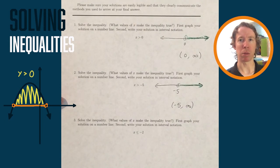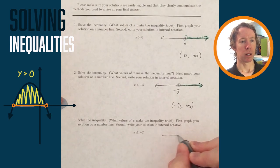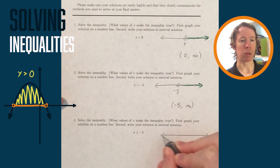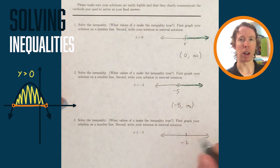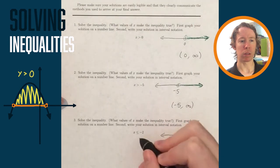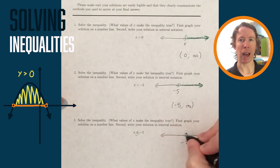And then x less than or equal to negative 2: the x values that make that true are the ones that are to the left of negative 2 on the number line, but they also include negative 2, so I'm filling in the circle at negative 2 this time.